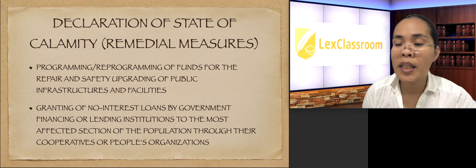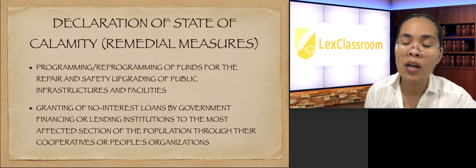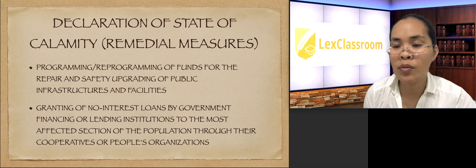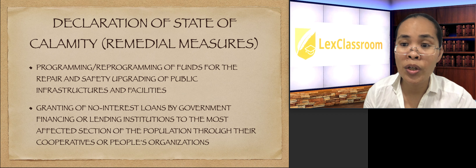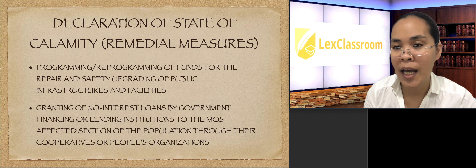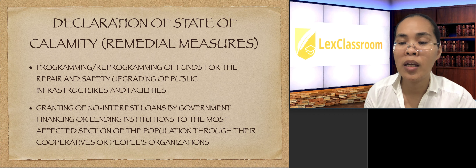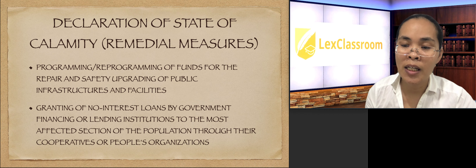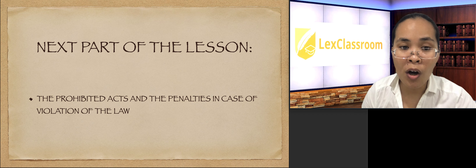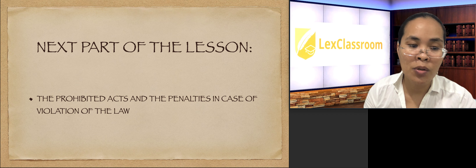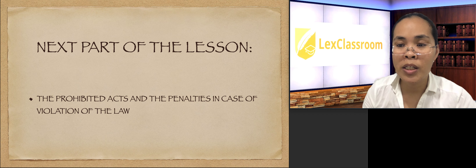Since we mentioned profiteering, hoarding, and overpricing, the next part of the lesson is specifically allotted to discuss the penal sanctions in case of overpricing, profiteering, and hoarding — the prohibited acts under the law. You have to take note that this is not just an administrative law but also a criminal law, criminalizing specific acts. Our next part will be on the prohibited acts and penalties in case the law is violated.